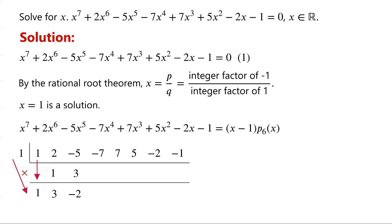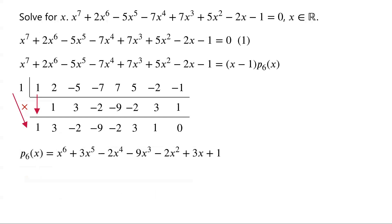Multiply the root 1 by negative 2, which is negative 2. Negative 7 plus negative 2 is equal to negative 9. Multiply the root 1 by negative 9, which is negative 9. 7 plus negative 9 is equal to negative 2. Multiply the root 1 by negative 2, which is negative 2. 5 plus negative 2 is equal to 3. Multiply the root 1 by 3, which is 3. Negative 2 plus 3 is equal to 1. Multiply the root 1 by 1, which is 1. Negative 1 plus 1 is equal to 0. The last entry in the bottom row is the remainder. The other numbers in the bottom row are coefficients of the polynomial of degree 6, P6 of x. So P6 of x equals x⁶ plus 3x⁵ minus 2x⁴ minus 9x³ minus 2x² plus 3x plus 1.